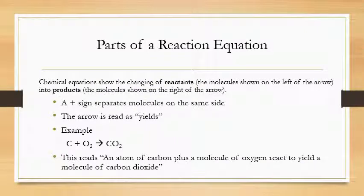Breaking down the parts of a reaction equation: chemical equations show the changing of reactants (molecules on the left-hand side) into products (molecules on the right-hand side). The plus sign separates molecules on the same side, and the arrow reads as 'yield.' For example, this symbolic equation reads: an atom of carbon plus a molecule of oxygen react to yield a molecule of carbon dioxide.